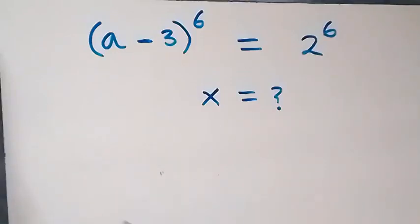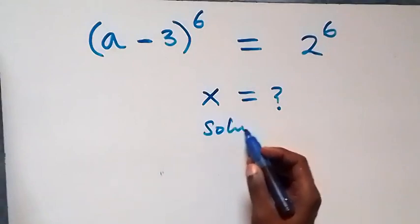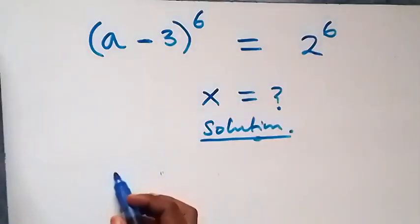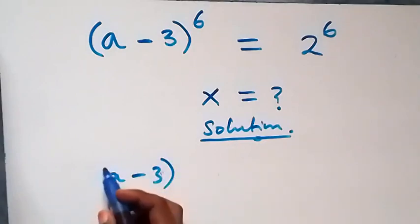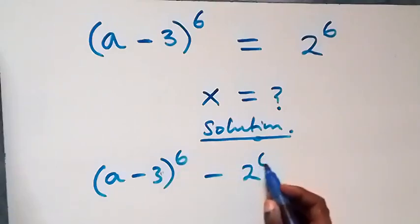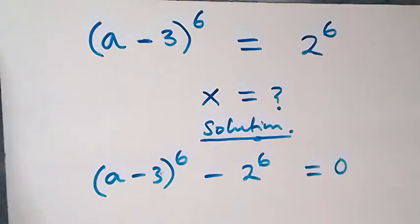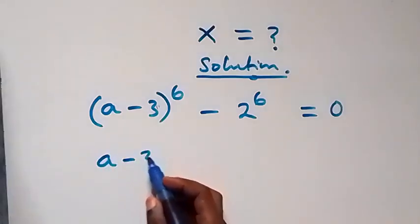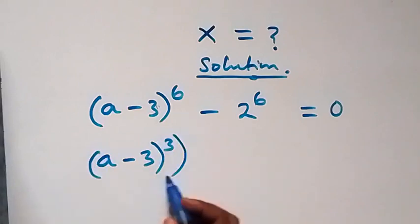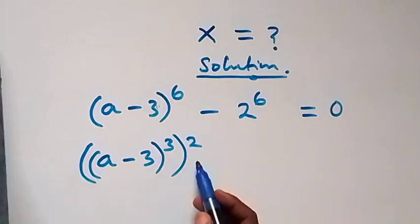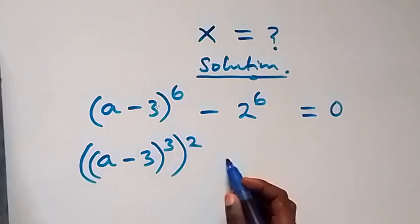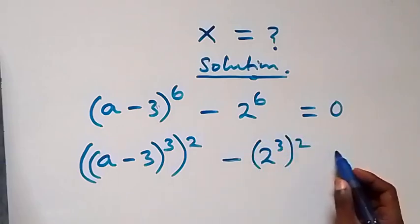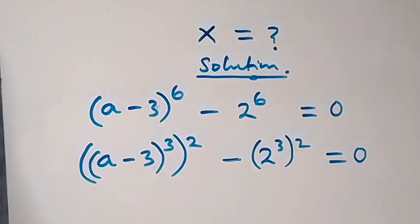Hello, you're welcome. How to solve this nice exponential equation. From here, we can take the right hand side to the left, and this becomes a minus 3, raised to power 6, then minus 2 raised to power 6, equals to 0.